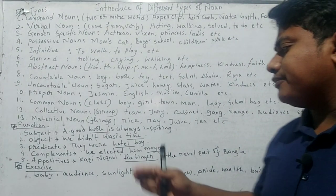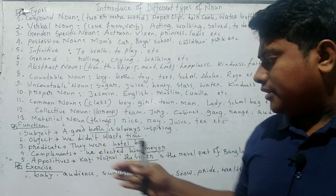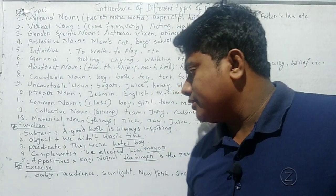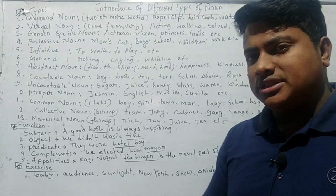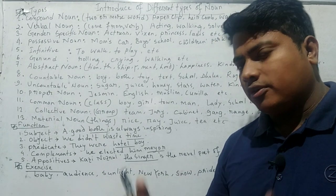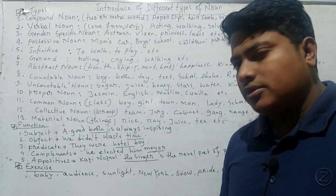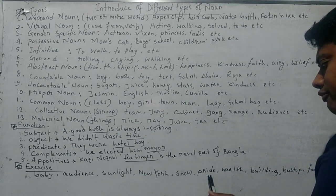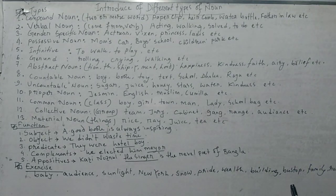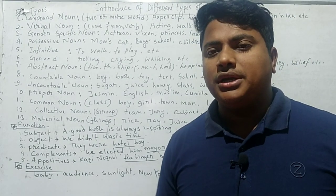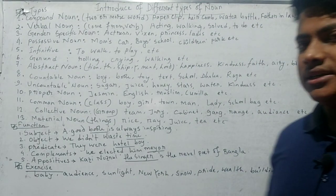Can you identify what types of nouns these are? Baby, audience, sunlight, New York, snow, fright, wealth, building, buses, family, ruling — I'll give you two or three minutes to guess and try to answer.